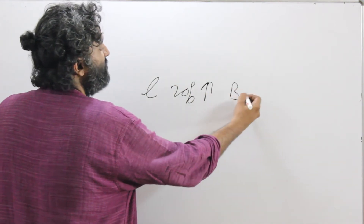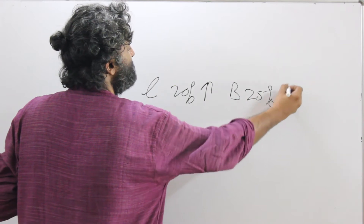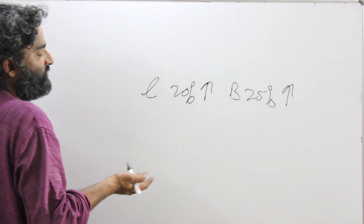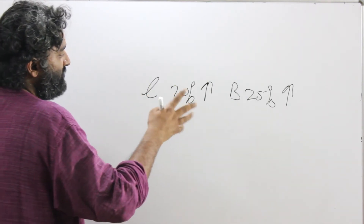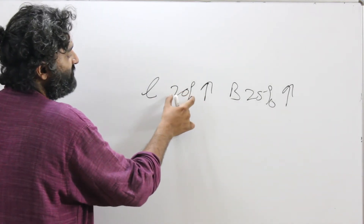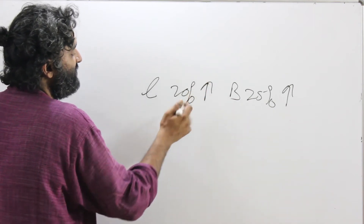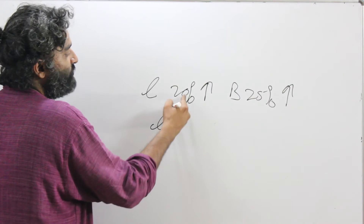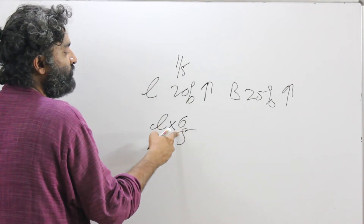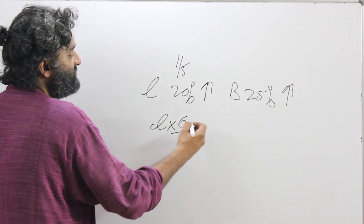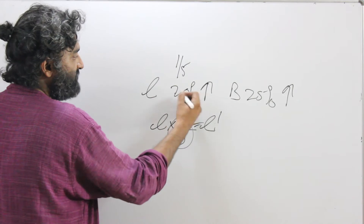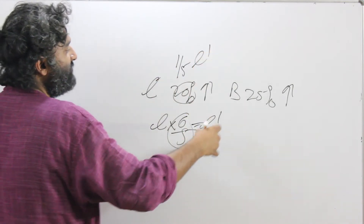Length of a rectangle is increased by 20%, and breadth of the rectangle is increased by 25%. Our question is: what is the percentage change in the area? When I look at this, length has increased by 20%. 20% is 1 by 5. Increase of 20% would mean a multiplying factor of 6 by 5. So length into 6 by 5 is equal to the new length. This percentage is connecting the length and the new length.